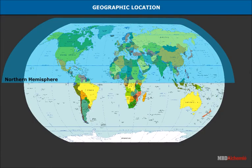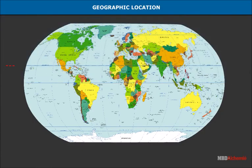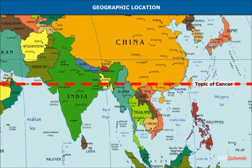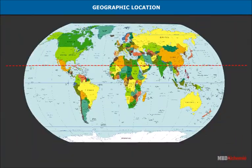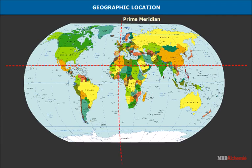The Tropic of Cancer at 23°30' North divides the Indian landmass into almost two equal halves. Peninsular India, below the Tropic of Cancer, lies in the tropical zone, while northern India is somewhat continental in nature. Situated to the east of the prime meridian, India belongs to the eastern hemisphere and occupies a central position with respect to the continental extent of the eastern hemisphere.